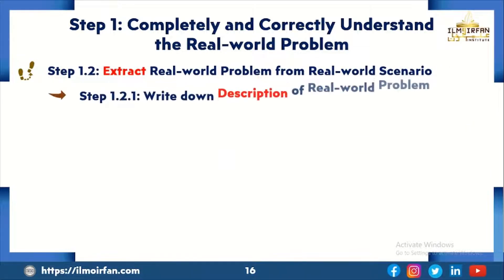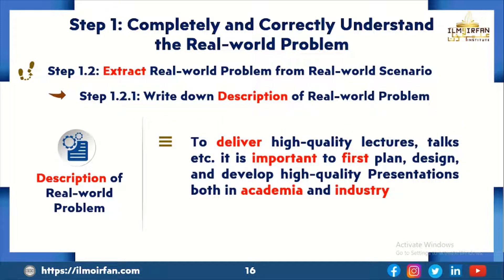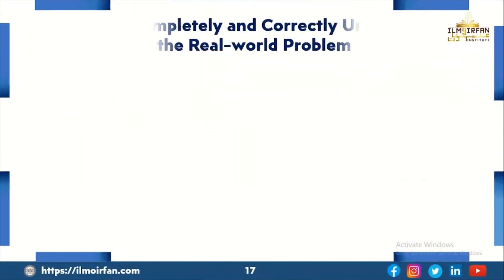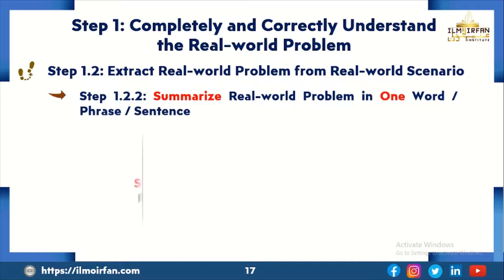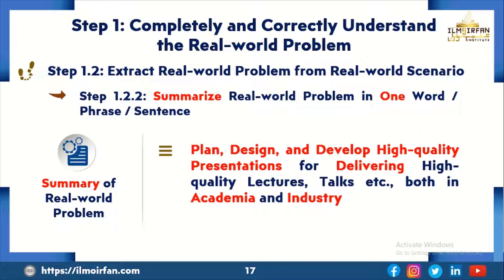Step 1.2: Extract the real-world problem from the real-world scenario. The first sub-step is to write down descriptions of the real-world problem. The description is: to deliver high-quality lectures, talks, etc., it is important to first plan, design and develop high-quality presentations both in academia and industry. The second sub-step is to summarize the real-world problem in one word, phrase and sentence: plan, design and develop high-quality presentations for delivering high-quality lectures, talks, etc., both in academia and industry.